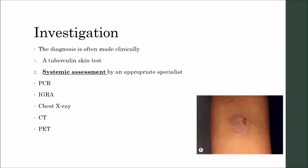Coming to investigations, the diagnosis is often made clinically considering evidence of previous TB exposure and other negative investigations. A tuberculin skin test may show a positive result within 48 hours, as shown in the figure. Systemic assessment by a co-specialist is recommended. Newer investigations include sputum testing with PCR and the interferon gamma release assay (IGRA) blood test.